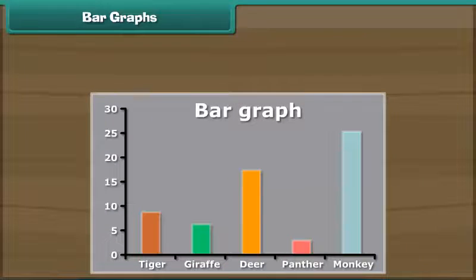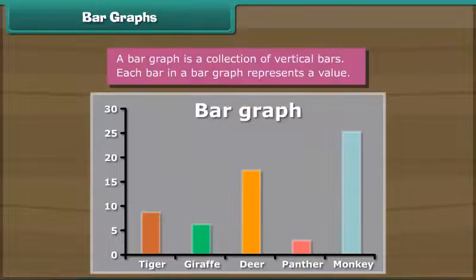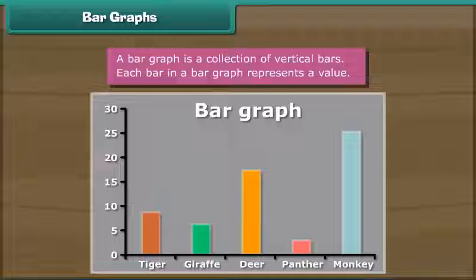Bar graphs. A bar graph is a collection of vertical bars. Each bar in a bar graph represents a value.